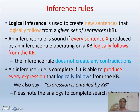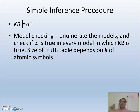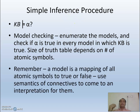To check whether KB entails alpha, think of it as searching through a state space of the knowledge base. We can do this using model checking: enumerate all models and check if alpha is true in every model in which the knowledge base is true. The problem is the size of the truth table — it depends on the number of atomic symbols. For three symbols, the truth table has 2³ = 8 rows. A model is a mapping of all atomic symbols to true or false.